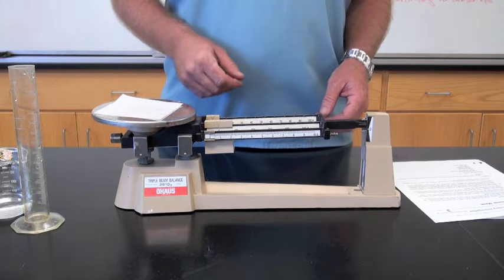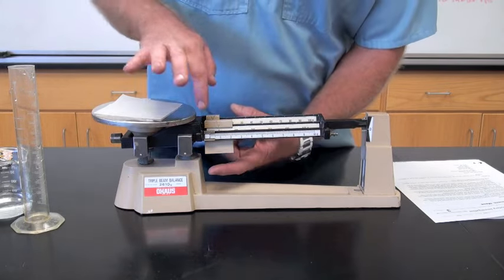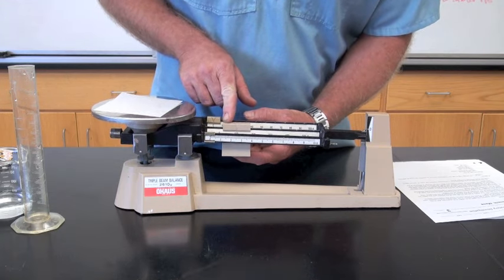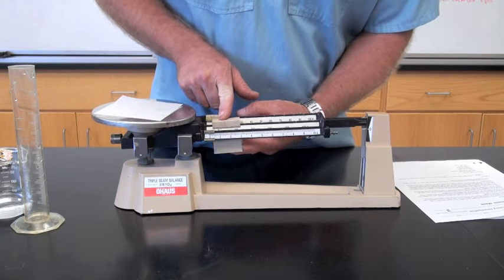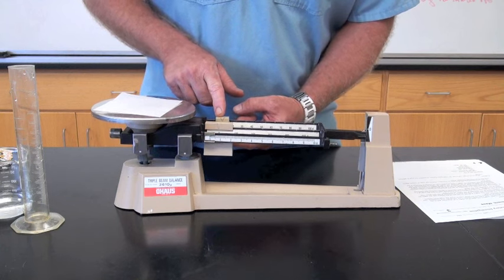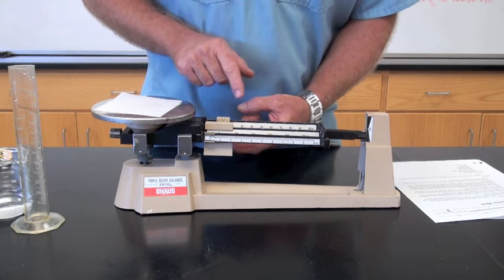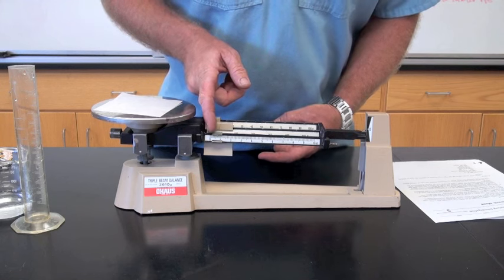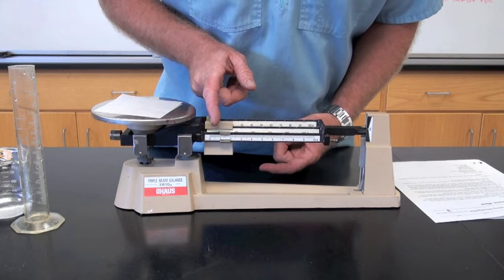I'm going to add this amount to the desired amount of the chemical. So first I have to find the mass of my weighing paper, starting in the middle with my 100 gram rider. Gone too far, now I go back. Use the 10 gram. That's also too far, so now I go back and use the tenth of a gram rider on the front to find the mass of my paper.